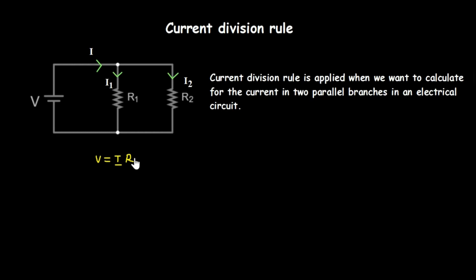From our previous lessons on resistors in a parallel connection, we learned that when resistors are in parallel, the same voltage appears across each resistor. So the voltage V from the source is the same across both R1 and R2.